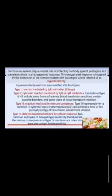Hypersensitivity reactions are classified into 4 types. Type 1 reaction is mediated by Immunoglobulin E antibodies. Type 2 cytotoxic reactions are mediated by Immunoglobulin G or Immunoglobulin M antibodies. Examples of Type 2 hypersensitivity include some forms of anemia, blood transfusion reactions, certain platelet disorders, and some types of tissue transplant rejection.